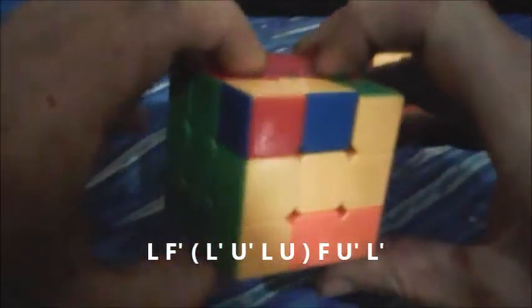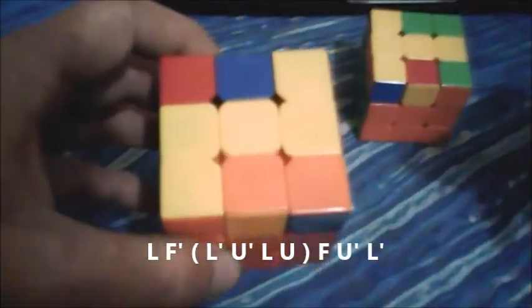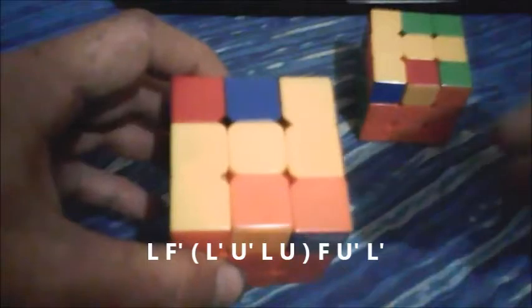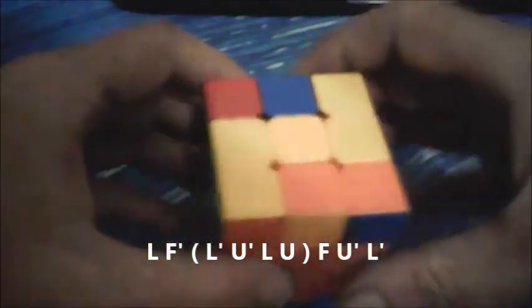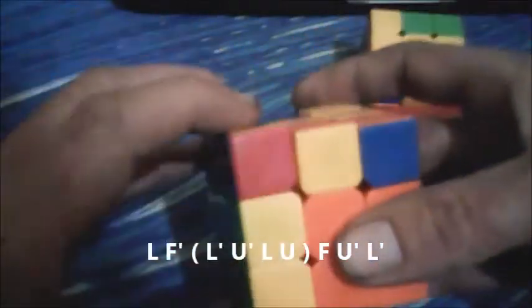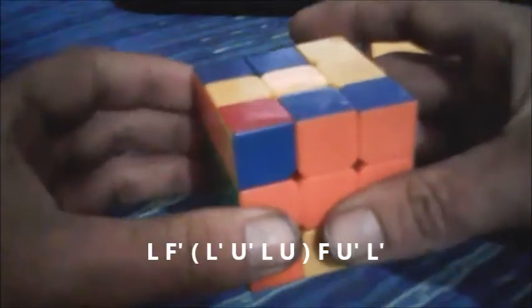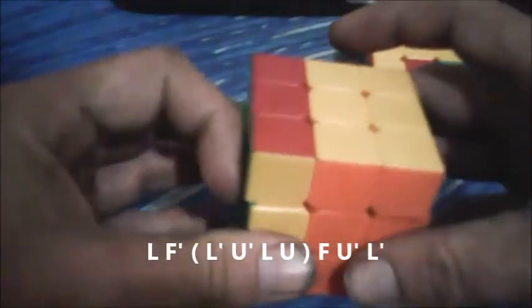So we'll run through that a couple of times just so you can follow along. But if you've got the mirror algorithm, then this one should not be too difficult to pick up. So we get L, F prime, L prime, U prime, L, U, F, U prime, L prime.